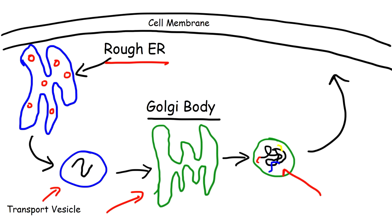Looking at the protein now, you can see it has a different shape, and you can see different colors added to it, representing the lipids and carbs added to the protein. Once the protein has been tagged with those extra molecules, it gets exported out of the cell. It travels to the cell membrane where it leaves the cell. The transport vesicle fuses with the cell membrane, becoming part of it and causing the membrane to expand — basically causing the cell to grow.